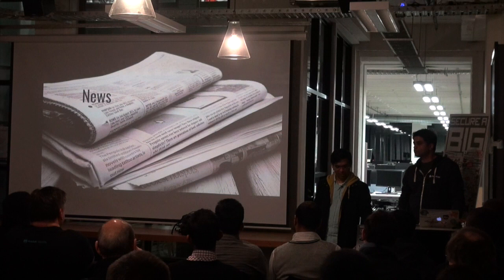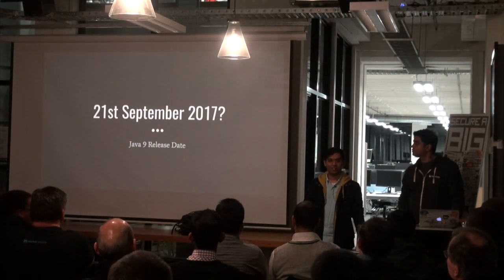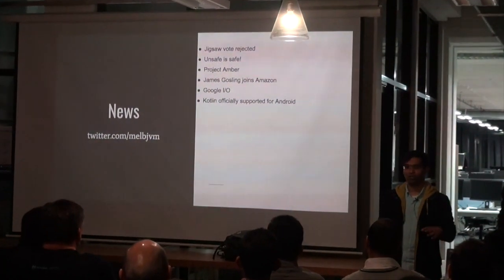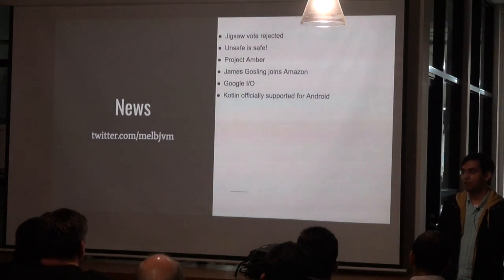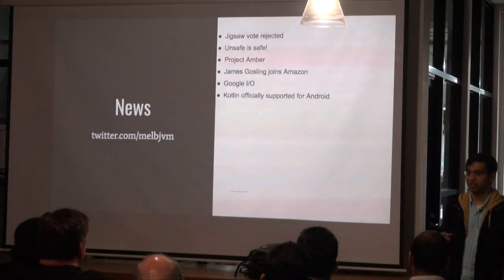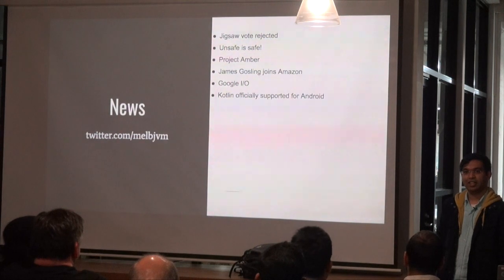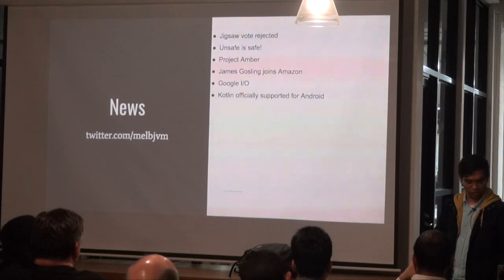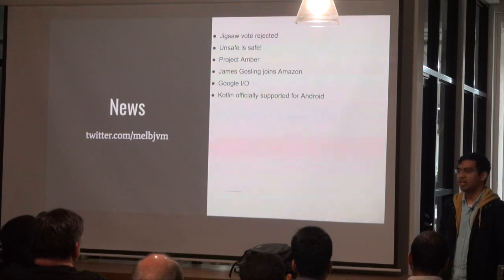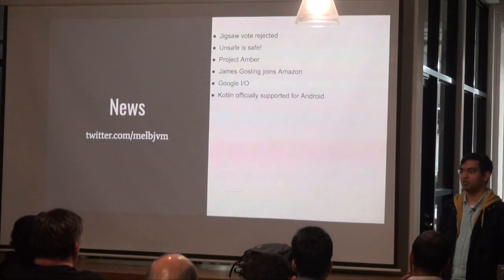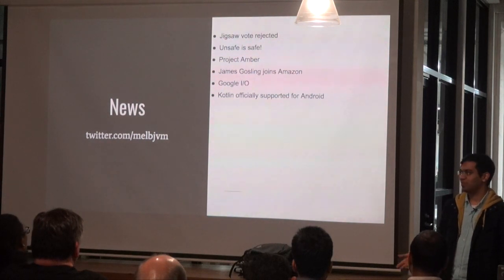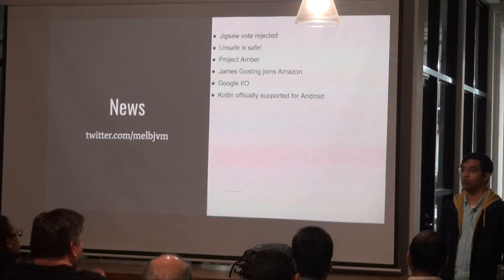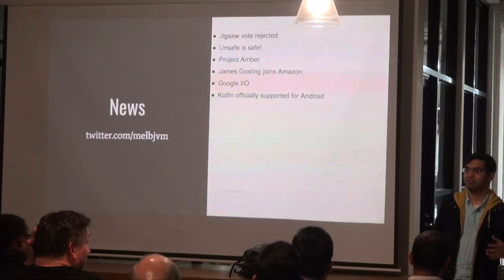Hopping on to the news: September 21st, 2017, Java 9 release date. This is a bit of a question mark. How many of us have been following the whole Jigsaw EC vote? Earlier this month, Jigsaw was rejected by the Java Executive Committee — a 10 to 13 vote — because of some issues with how it's been set up. They were thinking about pushing the Java 9 release date to September 21st, delaying it by eight weeks.